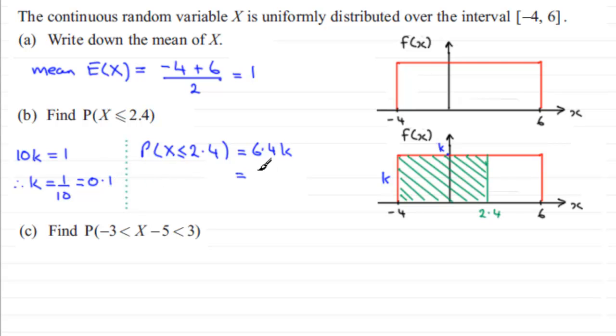k being 0.1, so 6.4 multiplied by 0.1 gives us 0.64.